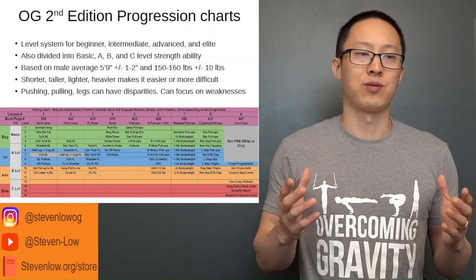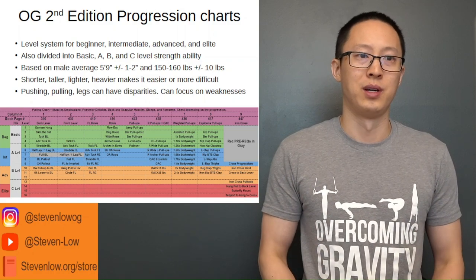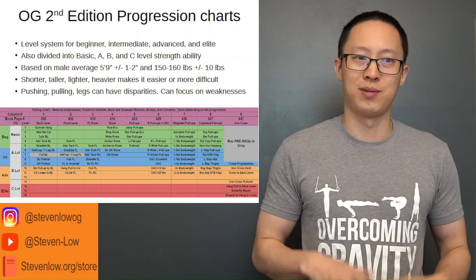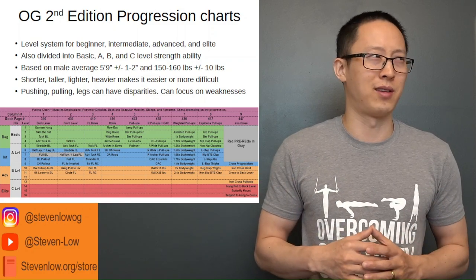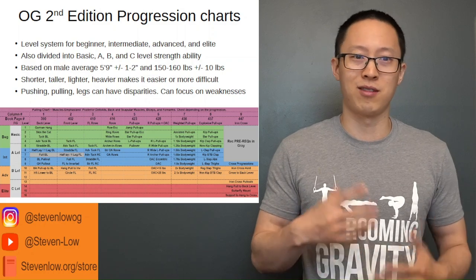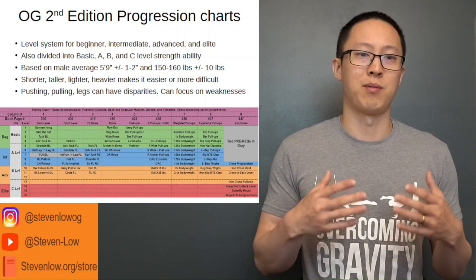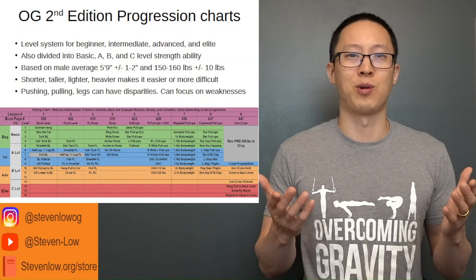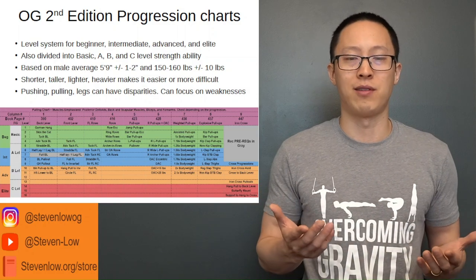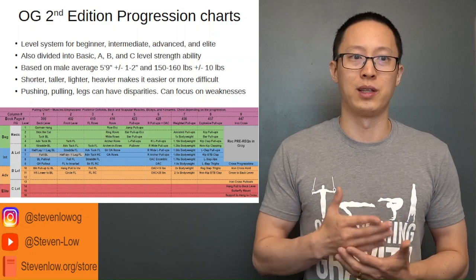Additionally, the charts were made for your general average male — about 5'9", plus or minus an inch or two, and about 150 to 160 pounds, plus or minus about 10 pounds. For metric, that's approximately 175 centimeters and maybe 70 kilograms or so, plus or minus a few kilograms. The charts are built for somebody who is relatively average, and of course if somebody is shorter and lighter or taller and heavier, things are going to be harder or easier in terms of doing those skills.